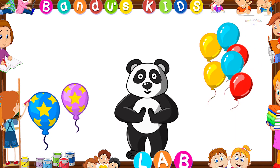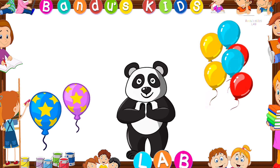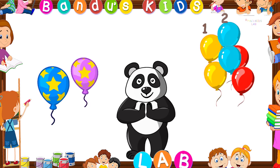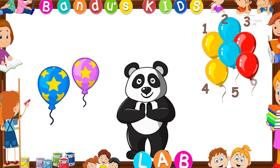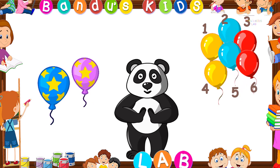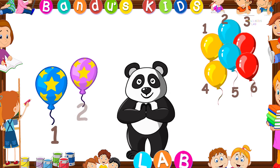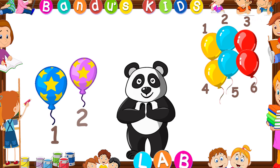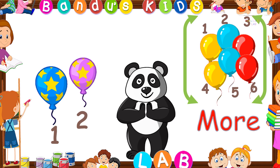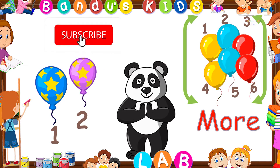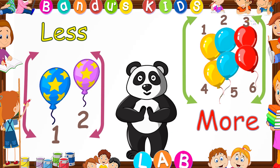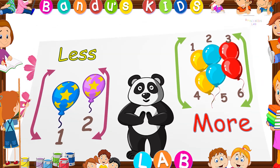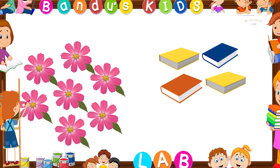Look at this picture. Here are two sets of balloons. Let's compare them. Before comparing, we must count the objects. Let's count: one, two, three, four, five, six — here are six balloons. Now let's count the other one: one, two — here are two balloons. This set of balloons is the more one because six is greater than two, and this set is the less one because there are only two balloons.